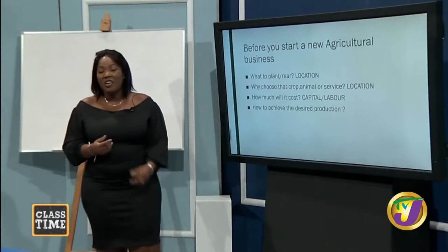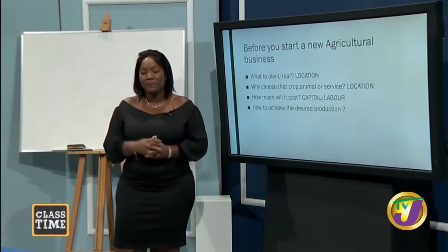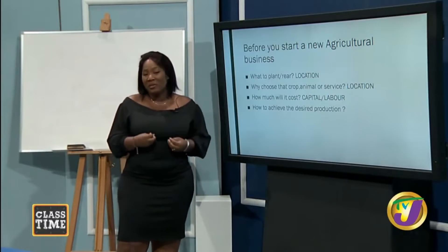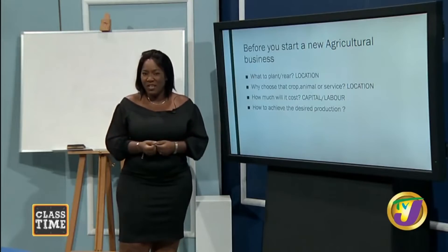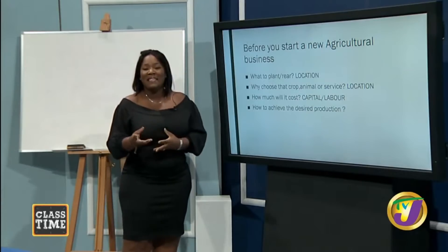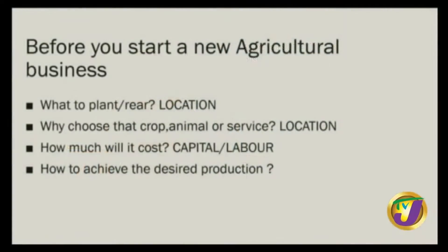A farmer may ask four questions when doing farm planning. First, what to plant or what to rear. Location may influence this — if you are living in an extremely cold environment, it wouldn't be ideal to plant peppers or rear pigs because of the climate. Second, why choose that crop, animal, or service venture? This can look to the availability of your demand source, where your highest demand point is.